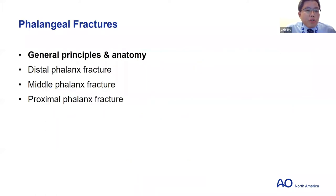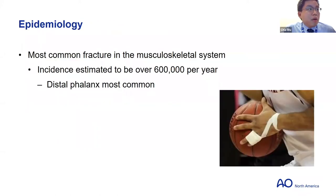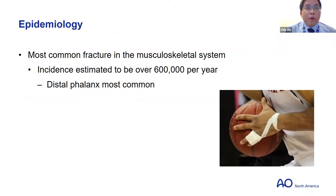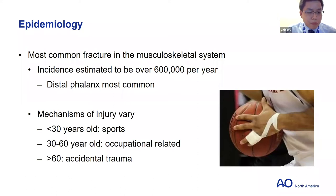Finger fracture is the most common fracture in the musculoskeletal system, with the distal phalanx being the most common — estimated at over 600,000 per year. It's commonly seen in all sorts of patients: athletic patients, occupational injuries, or really anybody. Young patients tend to have sports-related injuries, working-age people have work-related injuries, and the elderly can have accidental trauma such as falls.